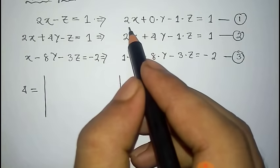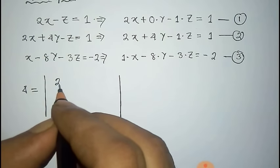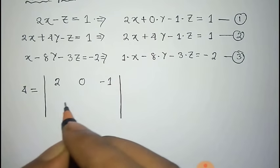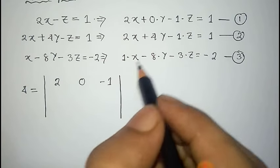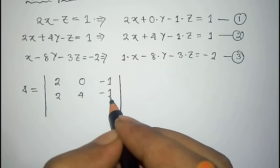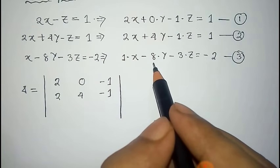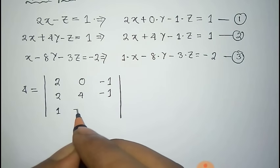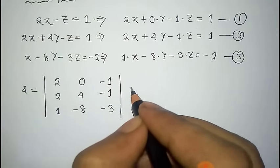So delta would be: the first row is the coefficients of x, y, z of the first equation, that is 2, 0, and minus 1. The second row is the coefficients of x, y, z of the second equation. And the third row is the coefficients of x, y, z of the third equation, that is 1, minus 8, minus 3.